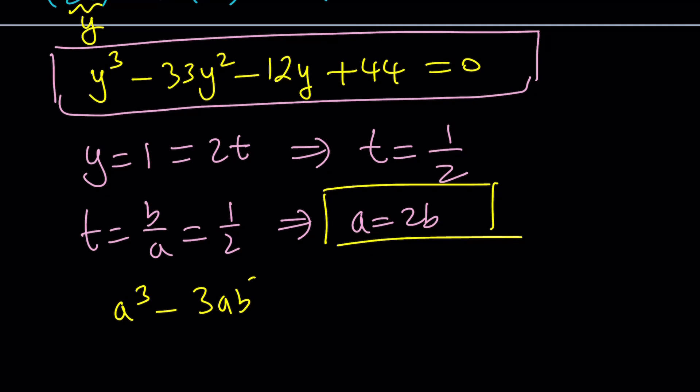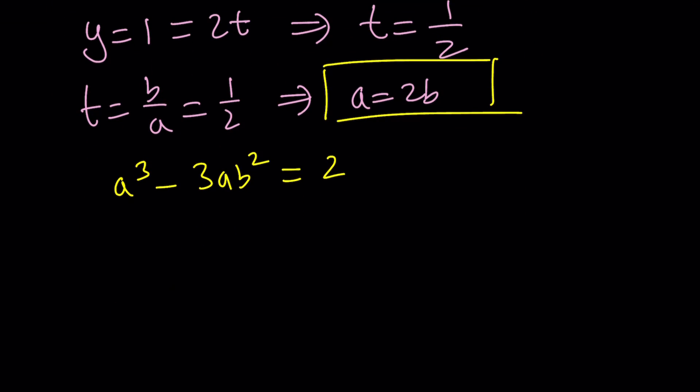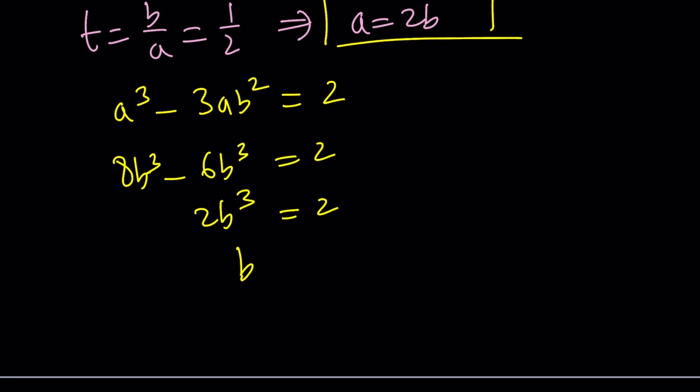Now I'm going to replace A with 2B. That's going to give me 8B cubed minus 6B cubed equals 2, and then 2B cubed equals 2. Remember, A and B are real numbers, so from here we get a single solution. B equals 1. And of course, since A is 2B, A becomes 2.